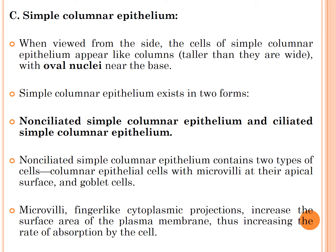The third type is simple columnar epithelium. 'Simple' means it contains a single layer of cells; 'columnar' means the shape of the cell is column-shaped, where the height is more than the width. When viewed from the side, the cells appear taller than they are wide, with the nucleus near to the base.